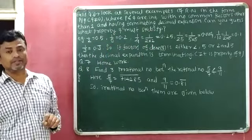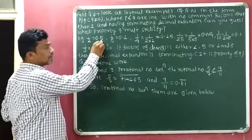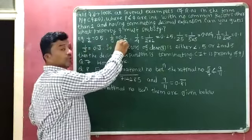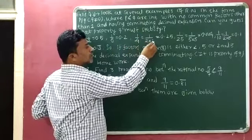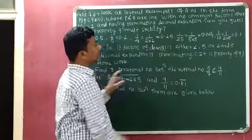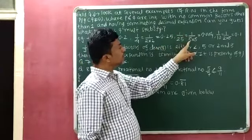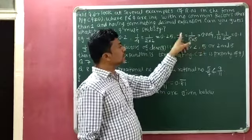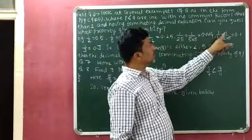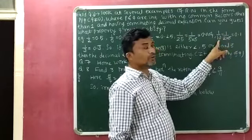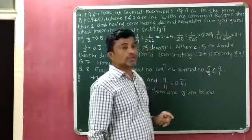I will explain this with the help of a few examples. 1 by 2 is equal to 0.5 — here 0.5 is terminating. 1 by 5 is equal to 0.2 — terminating. 1 by 4: the factors of 4 are 2 × 2, so 1 by 4 equals 0.25 — terminating. 1 by 25: the factors of 25 are 5 × 5, so 1 by 25 equals 0.04 — terminating. 1 by 10: the factors of 10 are 2 × 5, so 1 by 10 equals 0.1 — also terminating.